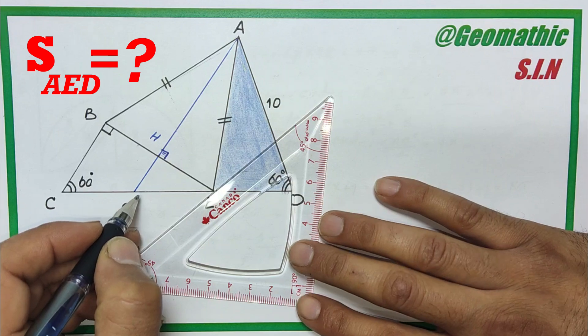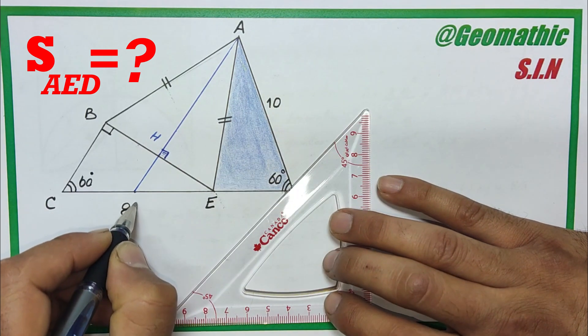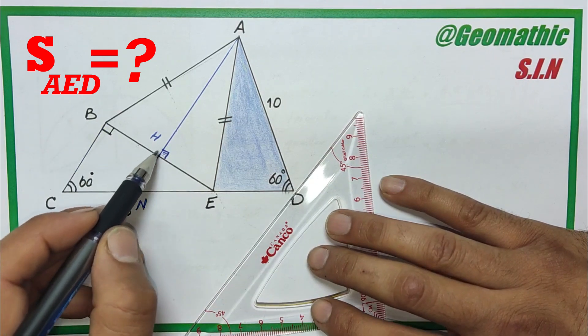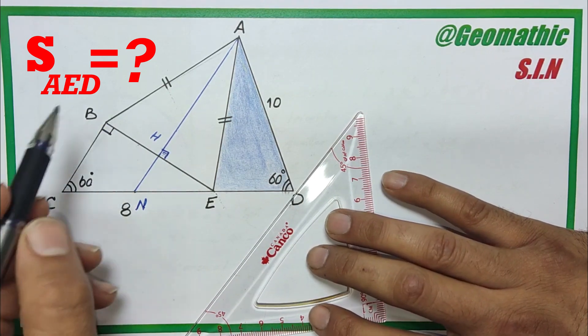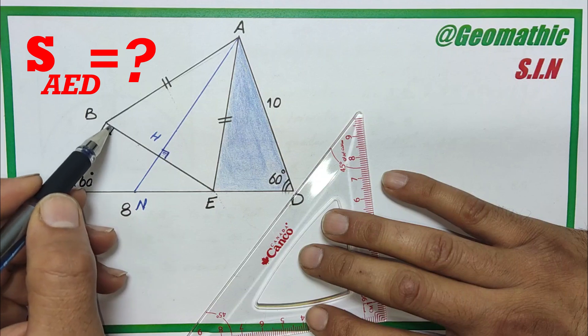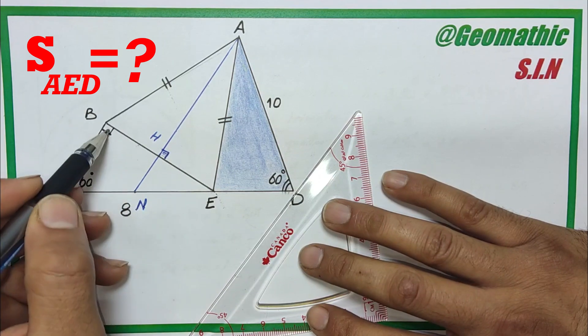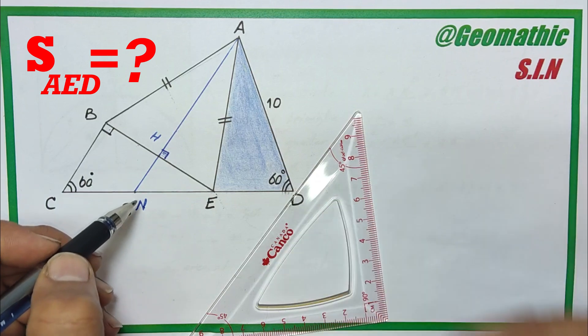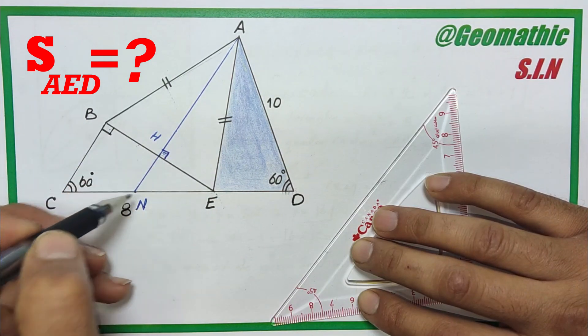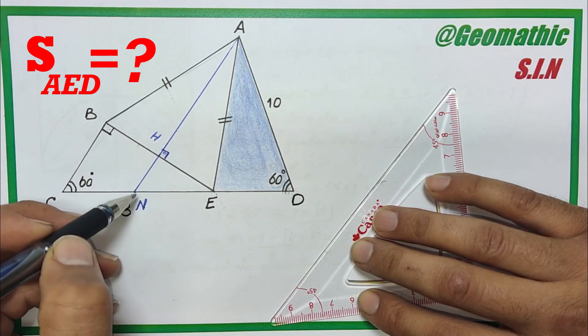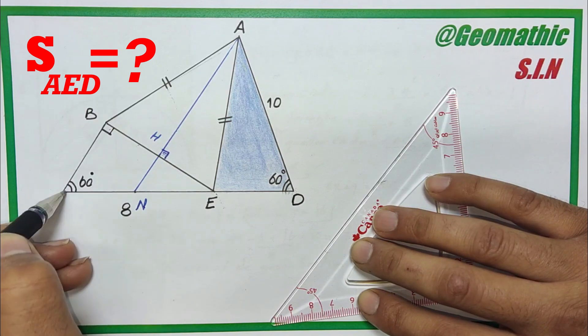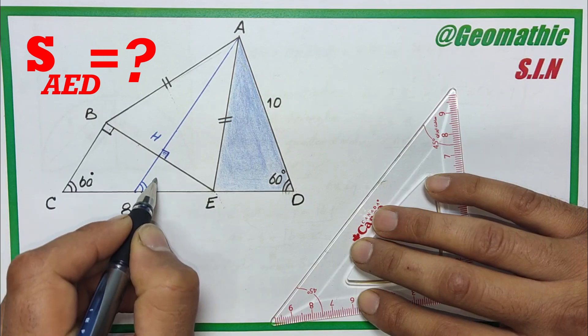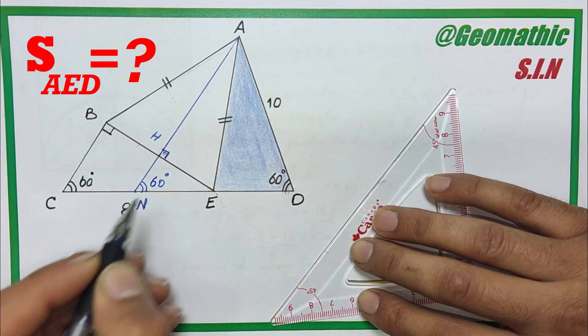And call the point of intersection here N, BC must be parallel to HN. It's a rule because both of them make right angles with side BE. So BC is parallel to HN. And then, because BC is parallel to HN and both lines intersect CE, the corresponding angles are equal, so angle N is 60 degrees like C.